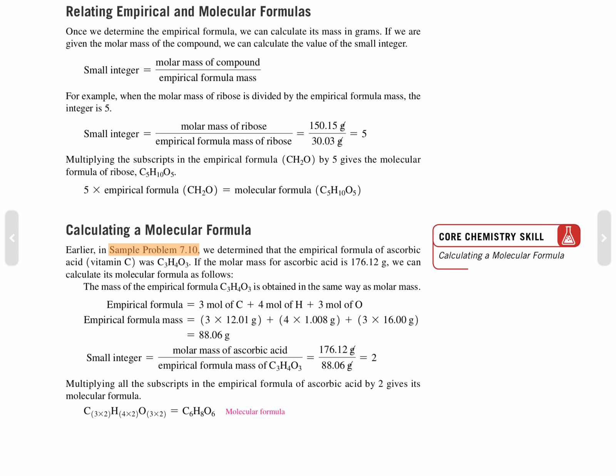Calculating the molecular formula. Earlier in sample problem 7.10, we determined that the empirical formula of ascorbic acid, vitamin C, was C3H4O3. If the molar mass for ascorbic acid is 176.12 grams, we can calculate its molecular formula as follows.